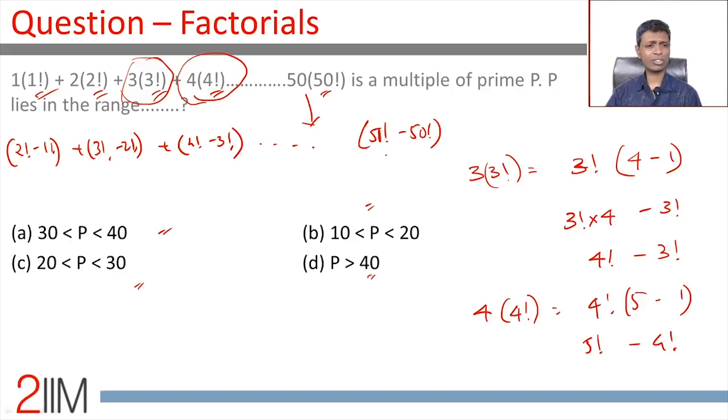So, what does this summation give us? The 2 factorial and 2 factorial get cancelled. 3 and 3 get cancelled. 4 will get cancelled. This minus 50 factorial will get cancelled somewhere else. This gigantic expression is going to be 51 factorial minus 1.